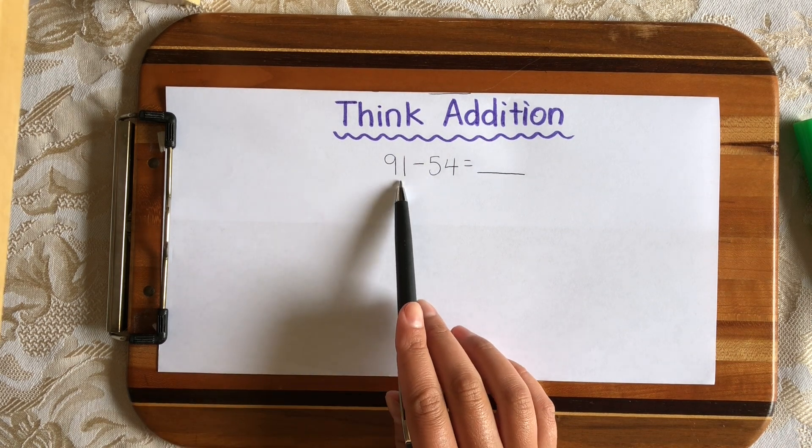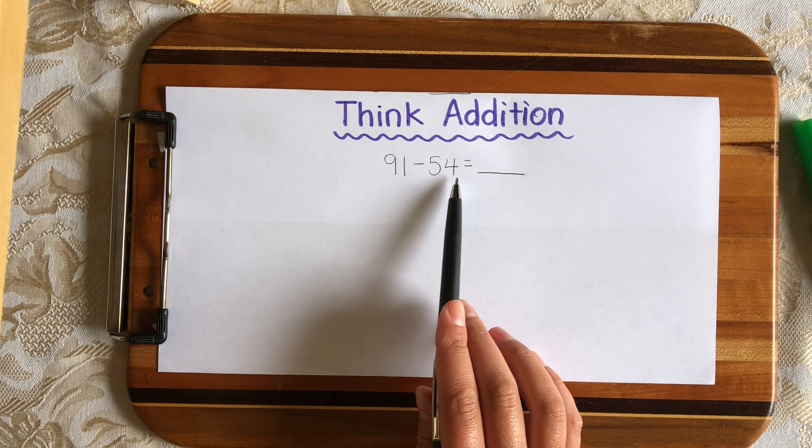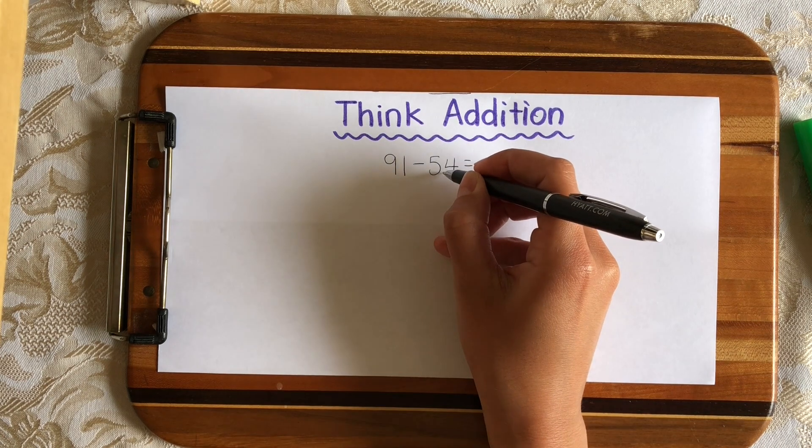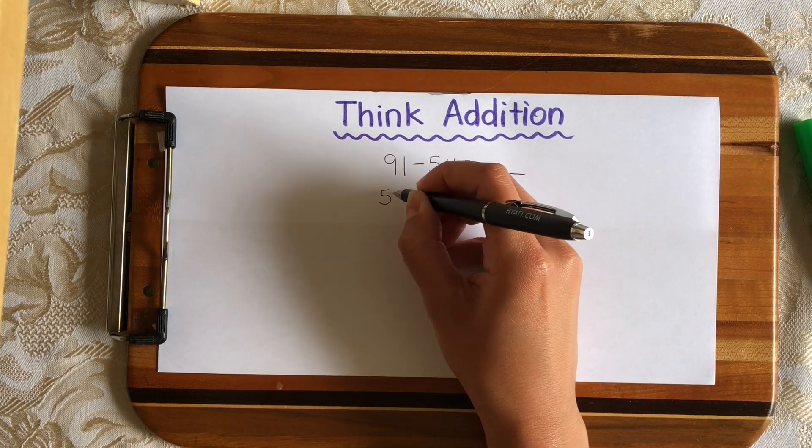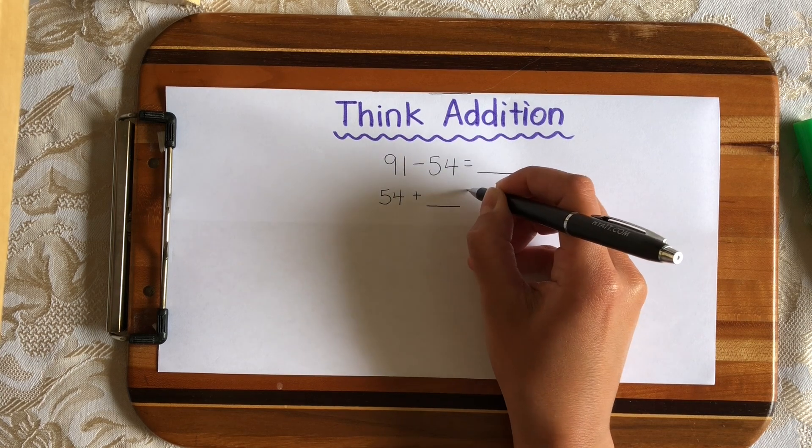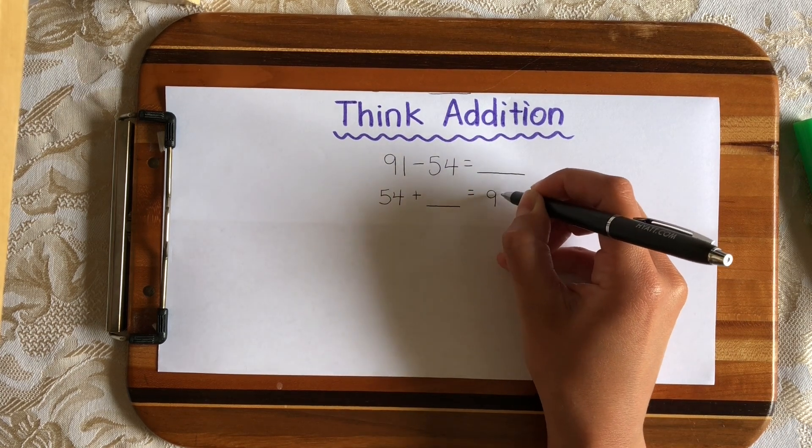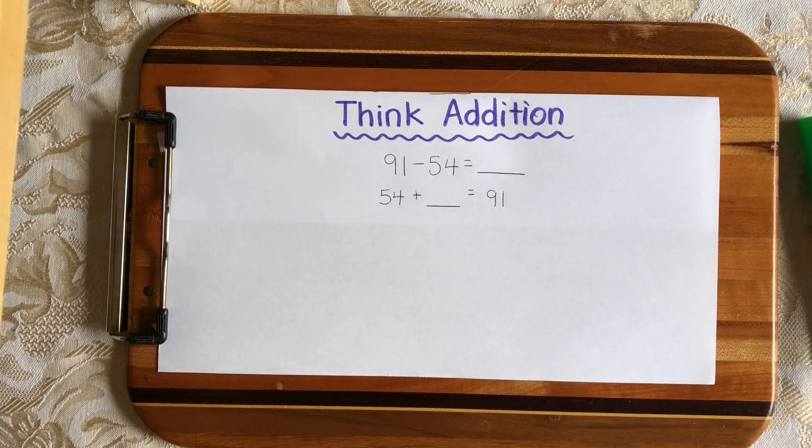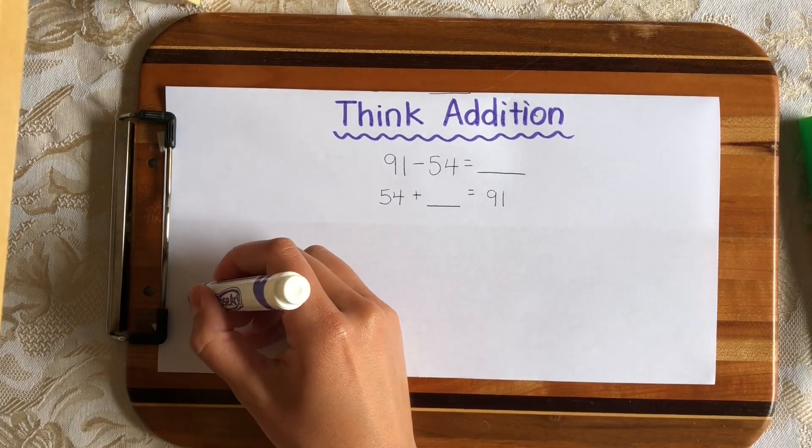So we can actually rewrite 91 minus 54 equals blank as an addition sentence. So we're going to put the number we're subtracting first, 54. And instead we're going to add something and stop at 91. And these two numbers will be the same.